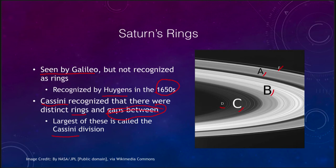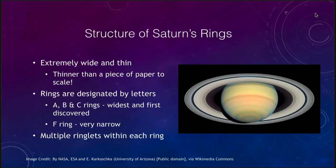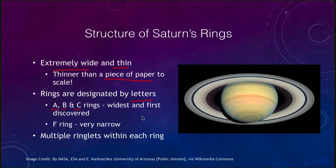When we look at the structure of these rings, we see they are extremely wide and thin — in fact, thinner than a piece of paper if you took them to scale. We designate the rings by letters. The primary ones are the A, B, and C rings, the first three to be discovered, and those are the primary, widest rings that we see. You also have the Cassini division, the gap in between those rings.